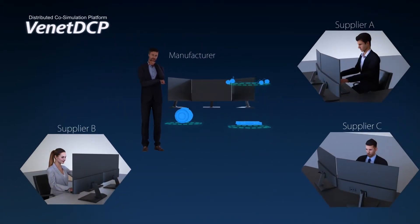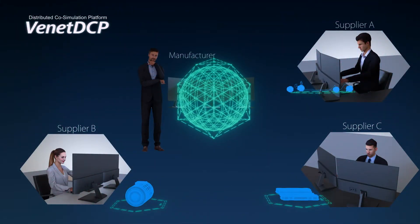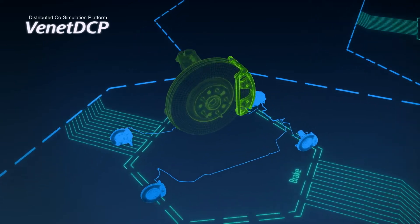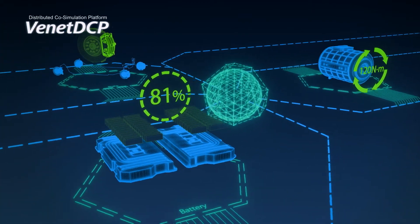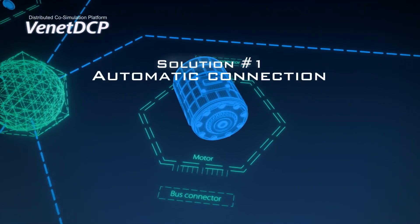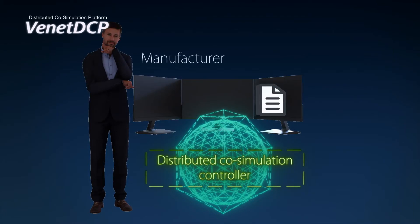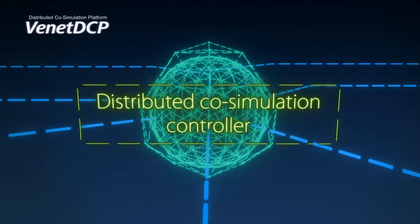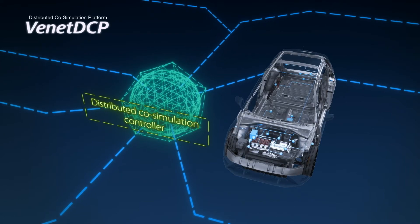Venet DCP takes a new approach. It's distributed, not centralized. Each supplier's model stays in the owner's environment and is connected via a network. Venet DCP enables distributed co-simulation. The models are automatically connected by bus connectors and a distributed co-simulation controller. Bus connectors are generated from the vehicle communication specifications, and the distributed co-simulation controller plays the role of in-vehicle communication.